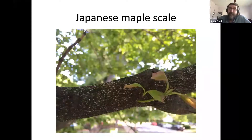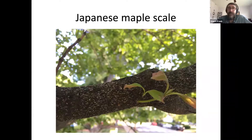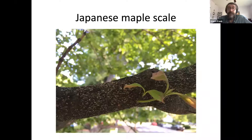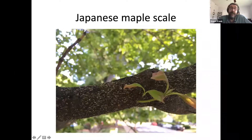Japanese maple scale is a big one you've probably encountered. It's an exotic scale, and the name is misleading in multiple ways — the scale does not only feed on Japanese maples and does not only feed on maples. Because of the poor common name, people may not look for or suspect it. I've had nursery growers say 'I don't have that because I don't grow Japanese maples,' but this scale is among the most generalist scales I know of. It will feed on hundreds of plant species, and its generations are much shorter, so it can become very dense very quickly.